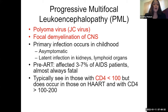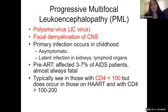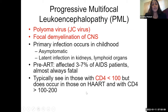PML causes focal demyelination of the CNS. Primary infection occurs in childhood and is generally asymptomatic, producing latent infection in the kidneys and lymphoid organs. Pre-ART era, it affected up to 7% of AIDS patients and was almost always fatal, because the most important treatment is giving them ART. You typically see this in patients with CD4 less than 100, but it can occur in those on ART with CD4 counts greater than 100 to 200.